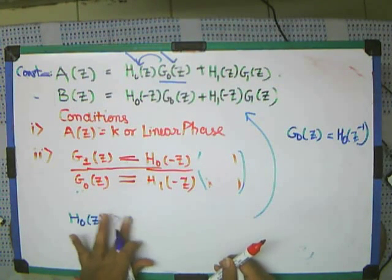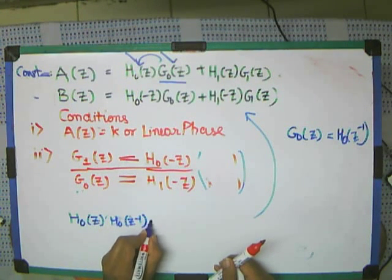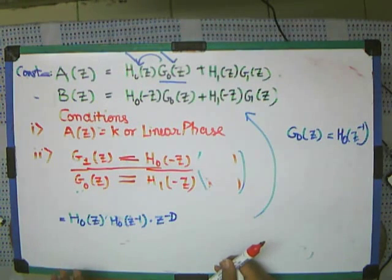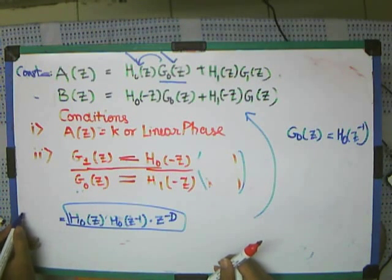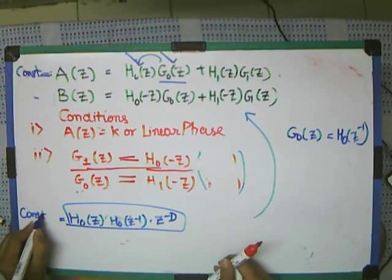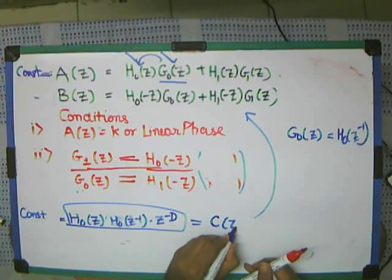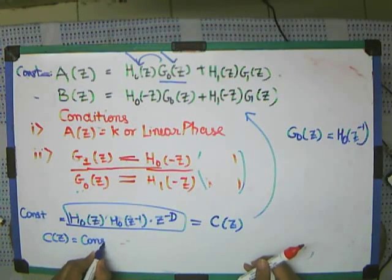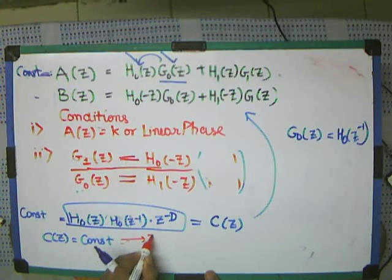Let's see — h0(z⁻¹) and h0(z⁻¹) times z to the power t. Now let us try to see how this has to be equal to some delta or some constant. Let me write this as C(z). Now C(z) has to be equal to a constant. To make this equal to a constant, we do some amount of time analysis.